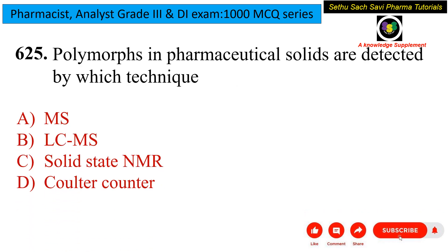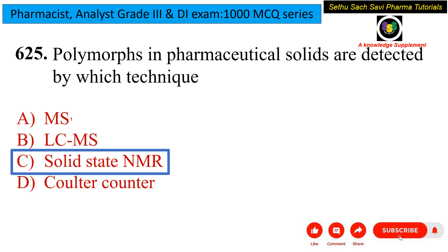Evaluating the given options: MS uses mass-to-charge ratio and cannot detect polymorphs effectively. LC-MS combines chromatography separation with mass-to-charge analysis, also not efficient for polymorphs. Coulter counter is mainly used for particle size analysis. Therefore, the best answer among the options is solid-state NMR.